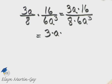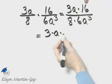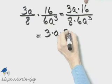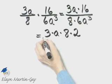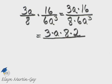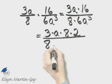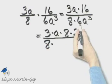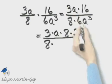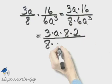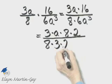Notice 16 and 8 have a common factor of 8, so I'm going to write 16 as 8 times 2. That's everything in the numerator. In the denominator I have 8. I had that common factor of 3, so I'm going to write 6 as 3 times 2.